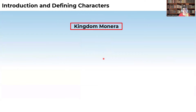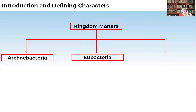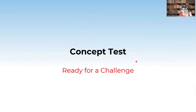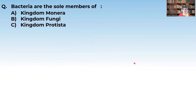Kingdom Monera includes mainly bacteria, true bacteria (eubacteria), and mycoplasma. Now, a concept test: Bacteria are the sole members of which kingdom — Kingdom Monera, Kingdom Fungi, Kingdom Protista, or Kingdom Animalia? Just now we saw that bacteria are the sole members of Kingdom Monera, so the correct option is A.